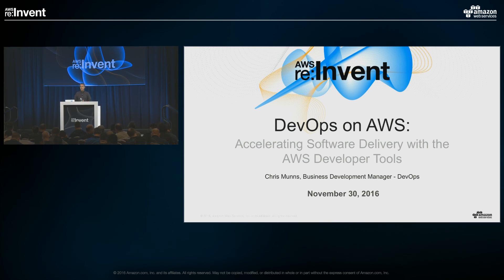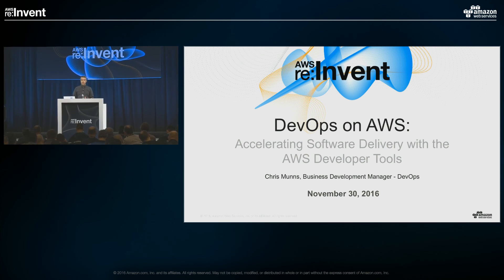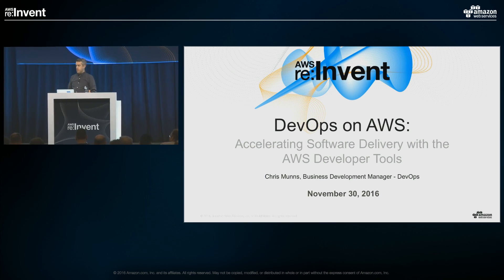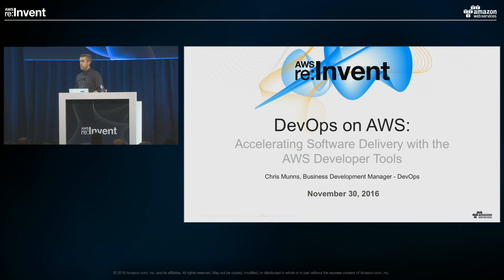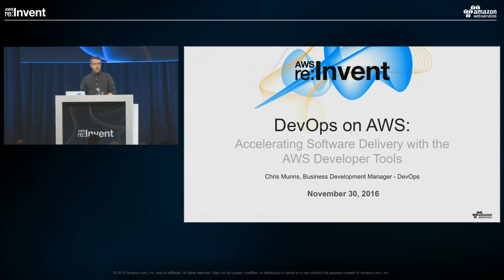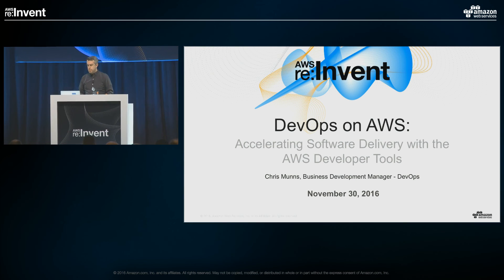Thank you all for coming to this session today. I appreciate your time — I know there are a lot of other exciting talks this week, so I'm really happy that you're here to join me. My name is Chris Munns. I'm the Business Development Manager for DevOps Services here at AWS, and I represent all of our developer and management tools globally. The title of today's talk is 'Accelerating Software Delivery with the AWS Developer Tools.'